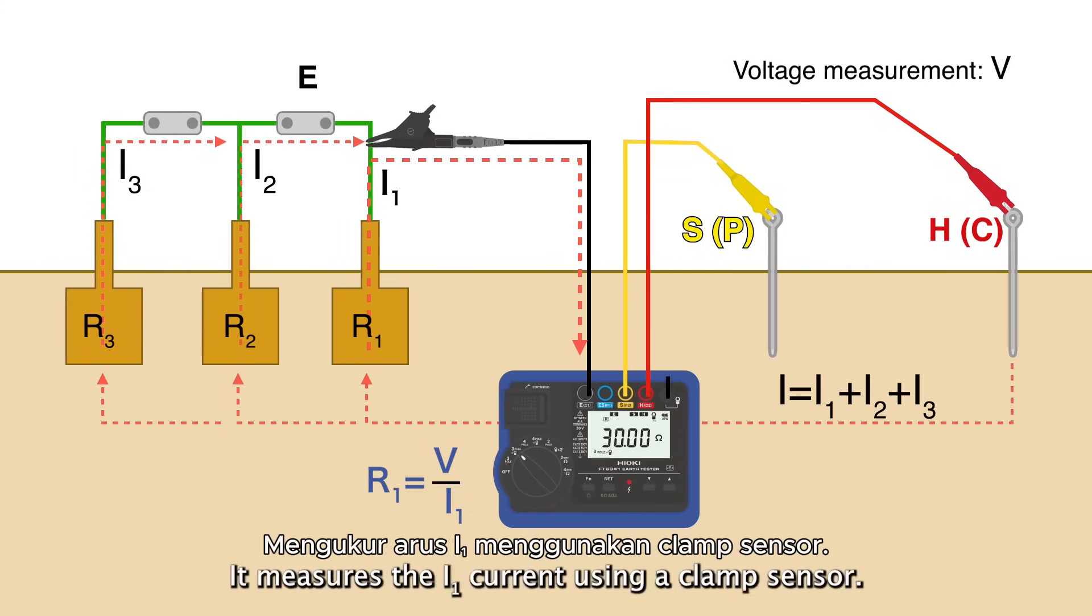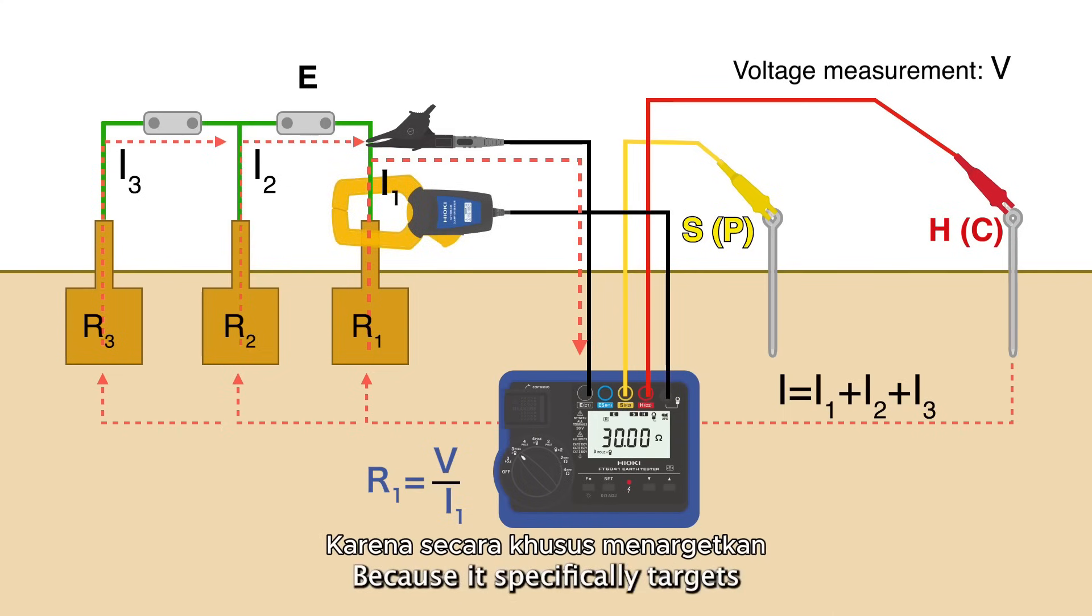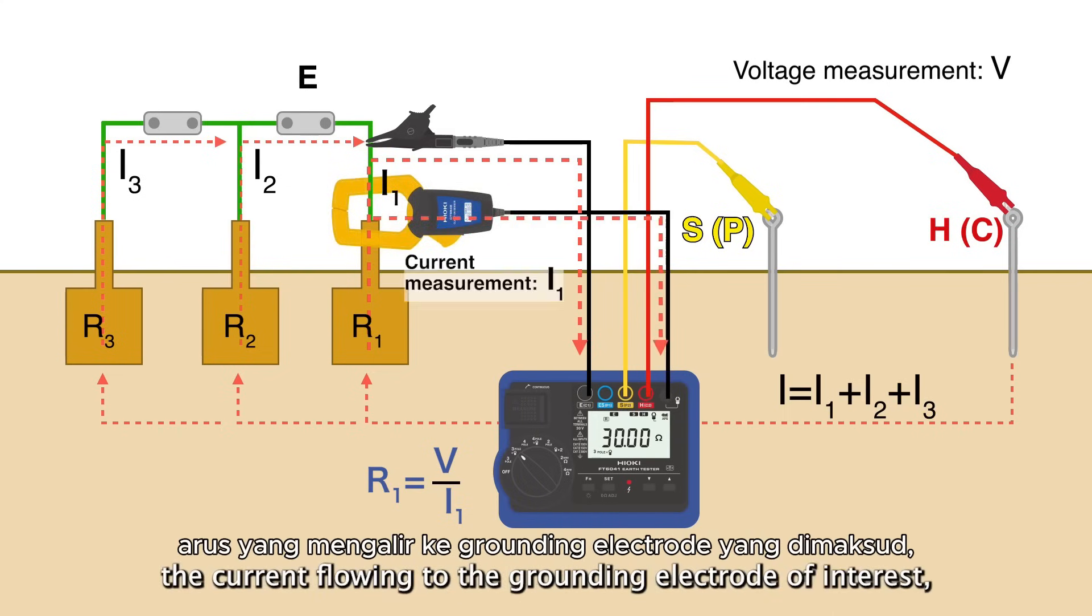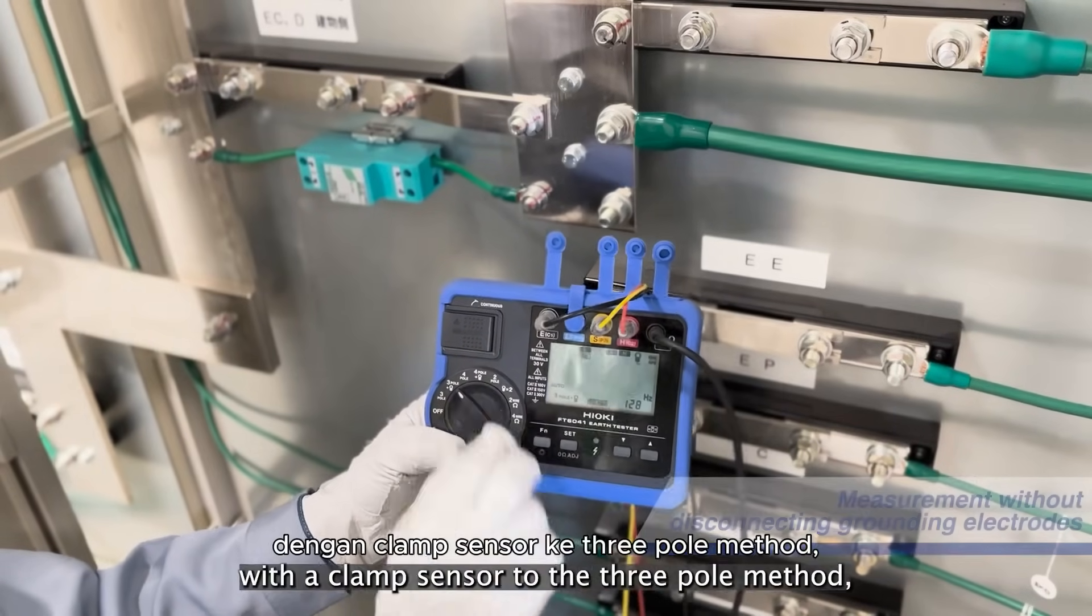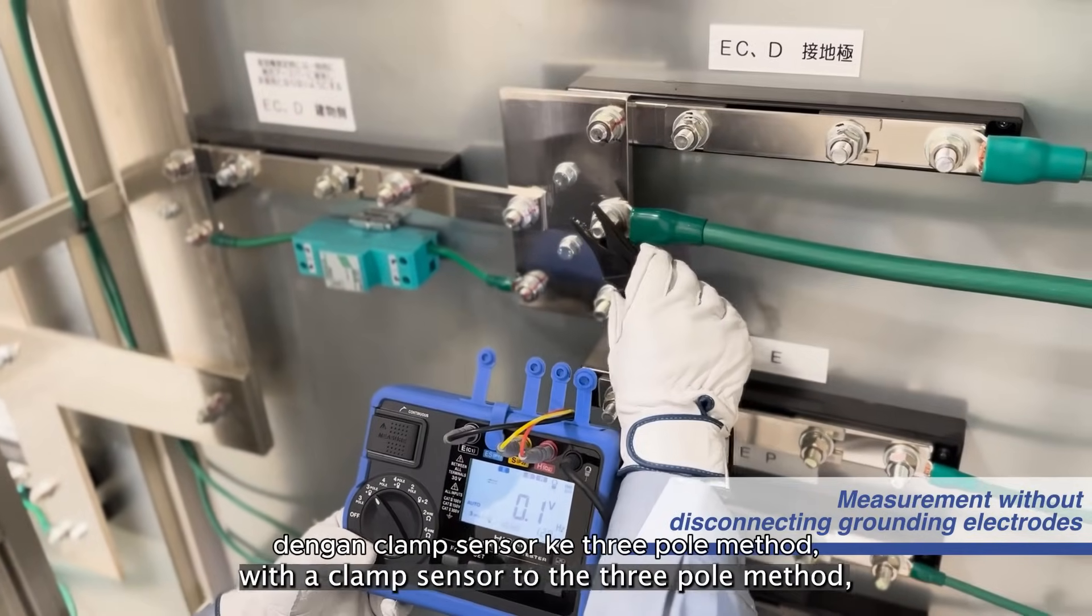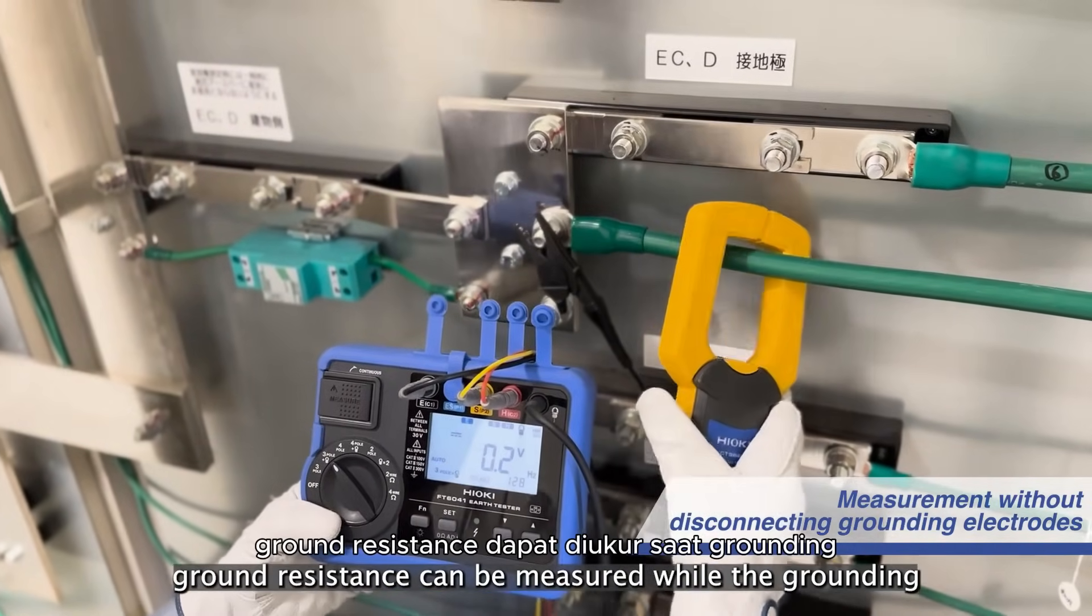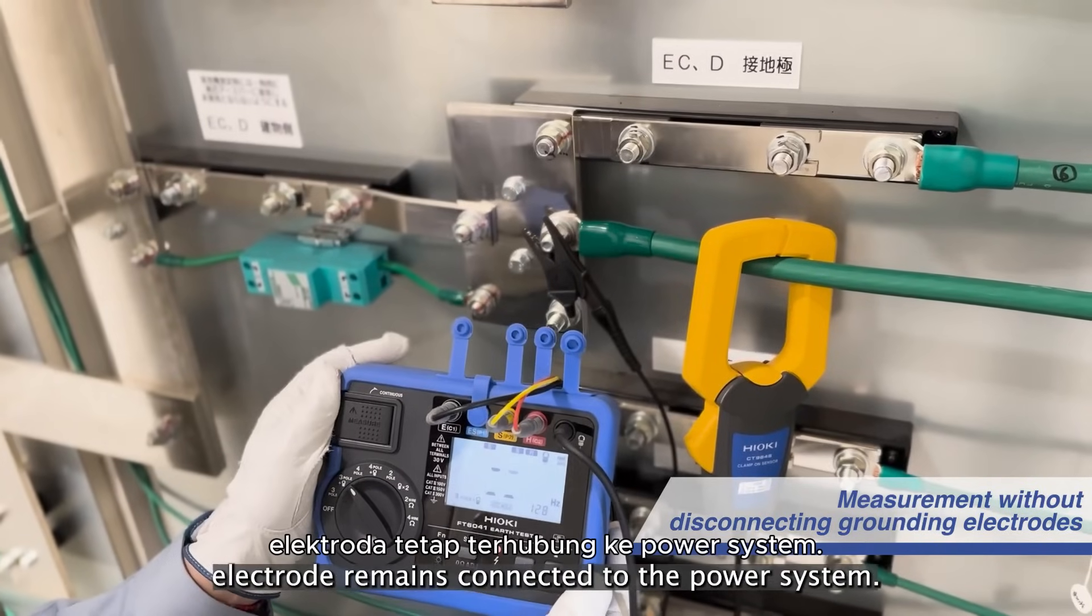It measures the I1 current using a clamp sensor. Because it specifically targets the current flowing to the grounding electrode of interest, the measurement is not influenced by other grounding electrodes. By adding current measurement with a clamp sensor to the 3-pole method, ground resistance can be measured while the grounding electrode remains connected to the power system. This eliminates the need for disconnecting the grounding electrode, which saves time and effort on measurement tasks.